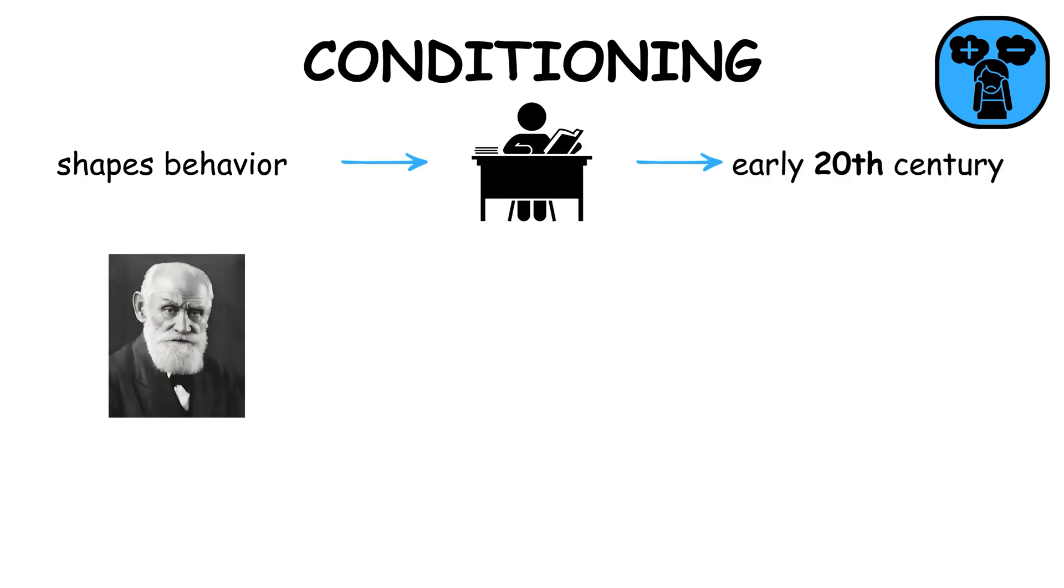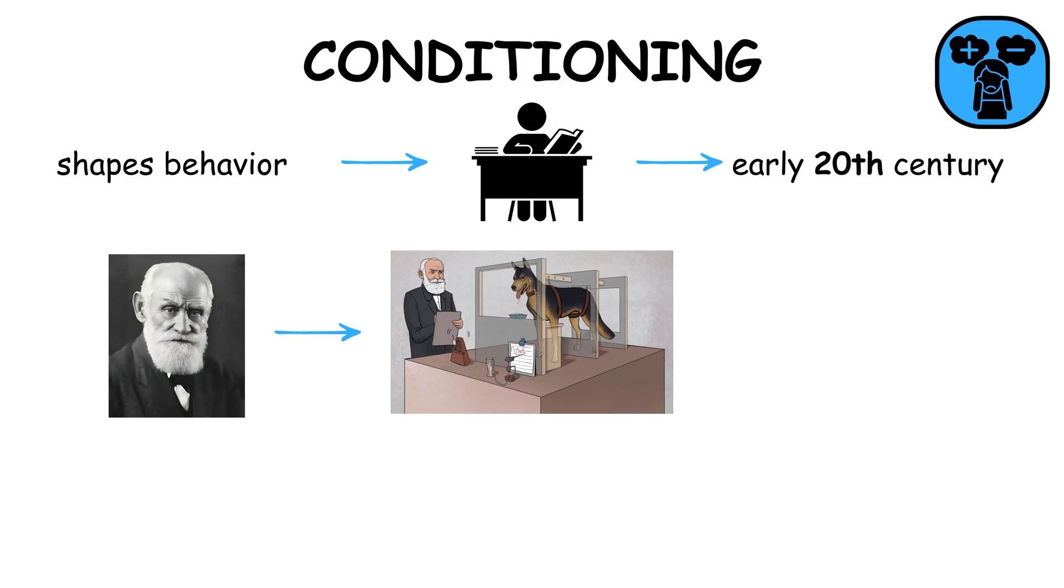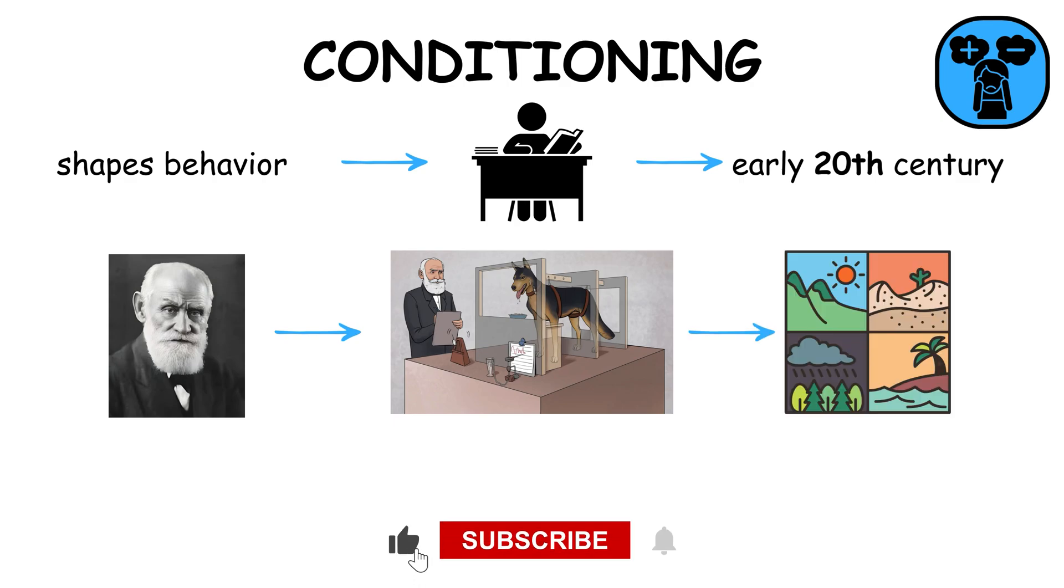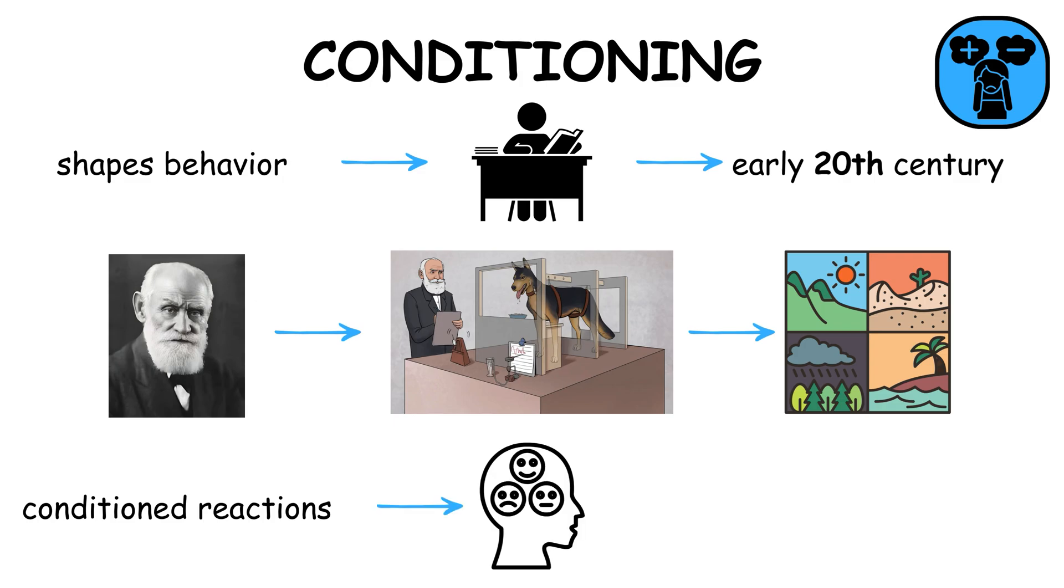Conditioning shapes behavior through learned responses. In the early 20th century, Pavlov's experiments with dogs demonstrated how environmental stimuli can trigger conditioned reactions, a fundamental concept in behavioral psychology, affecting how humans learn from their surroundings.